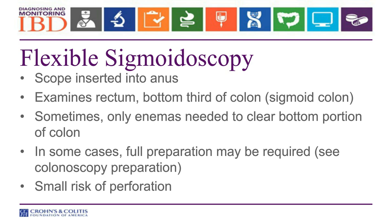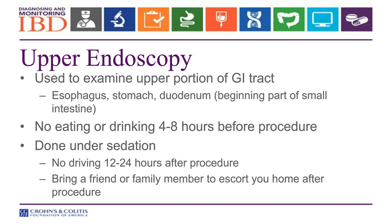An upper endoscopy uses a thinner scope that goes through the mouth and down into the esophagus, stomach, and the duodenum, which is the first part of the small intestine. The prep is much easier — you just can't eat anything four to eight hours beforehand because we need your stomach to be empty. This is also done with sedation, so even though it's a much shorter test with minimal prep, you still need a family member or friend to drive you home, and no driving for 12 to 24 hours afterwards.